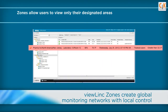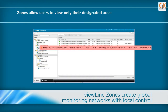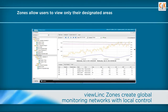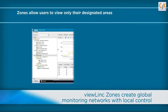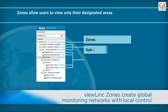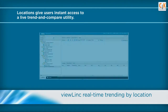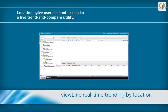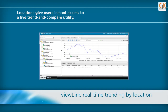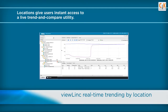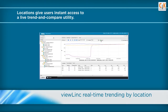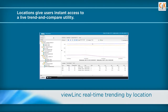ViewLink allows users to remotely manage a global network of monitored locations by organizing their areas of responsibility into zones. Zones are designated by ViewLink administrators who grant access and reporting rights to users. Zones can contain a single monitored location or thousands. Every location is instantly accessible with a live graphical display.